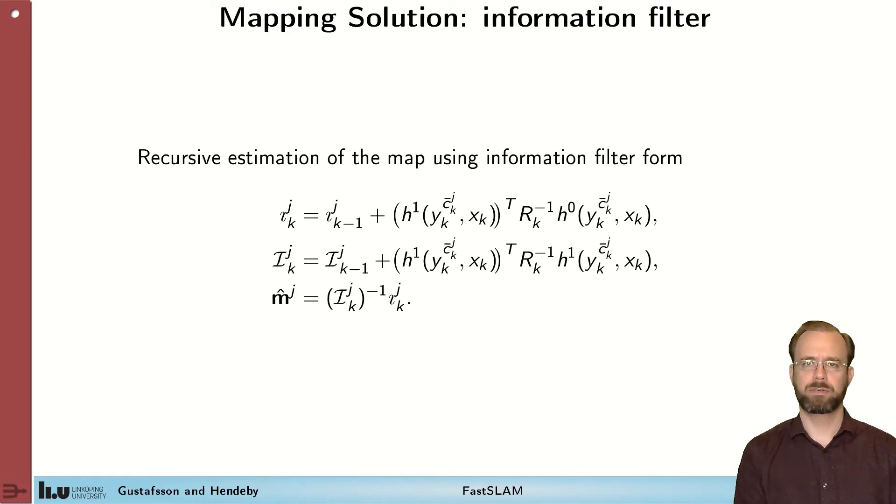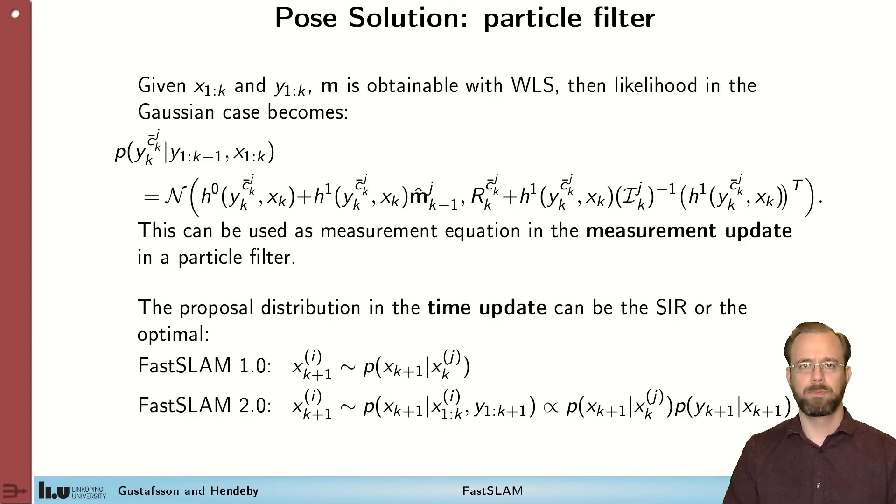We want to compute the map recursively, which we can do with information filter. You see the equations here. It's basically taking the weighted least squares solution and just adding one term at the time to this information, the information state. And we can from that extract the landmark position by multiplying the information state with the inverse information.